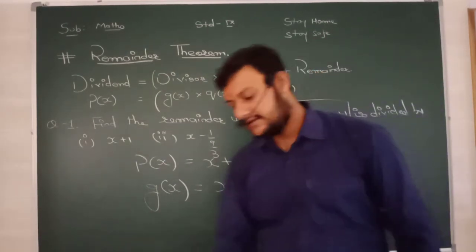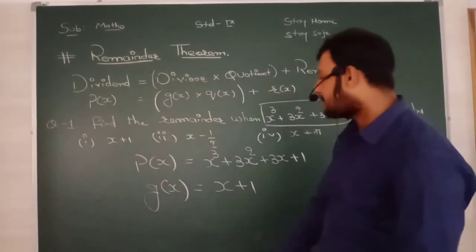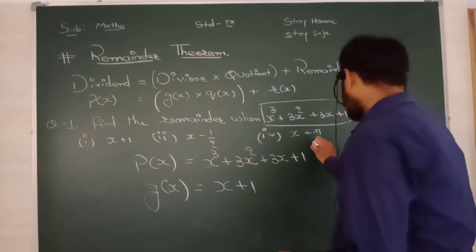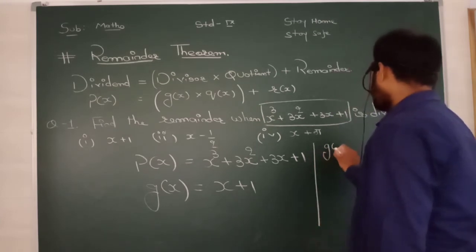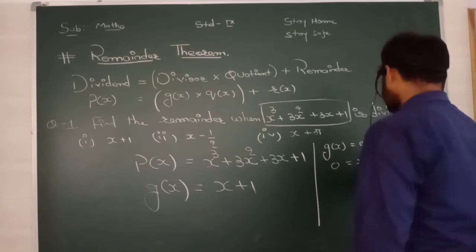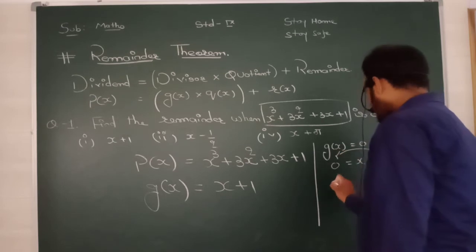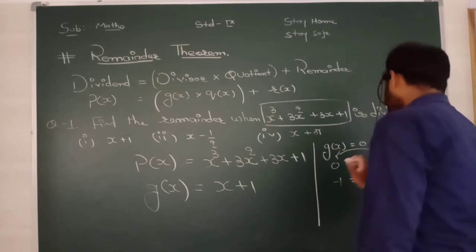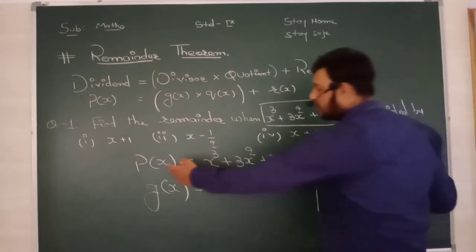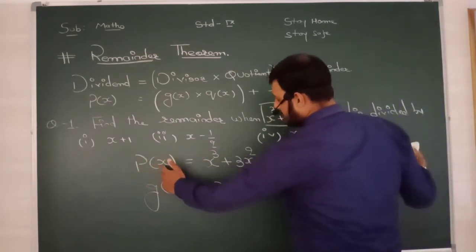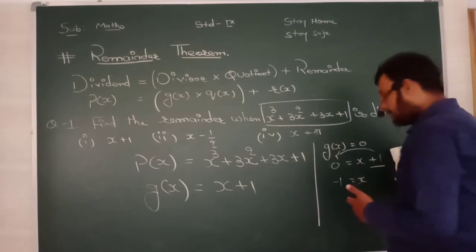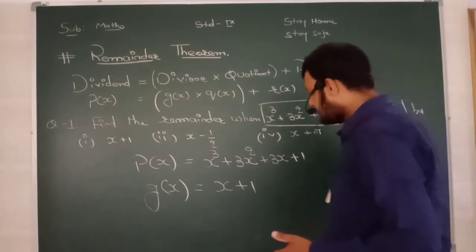Dear students, now we are going to discuss the easy method. वो easy method क्या है? Dear students, आपको g(x) को 0 assume करना होगा. You have to assume g(x) = 0, means 0 = x + 1. यह positive 1 अगर यहाँ पे आ गया तो बन गया negative. So x की value हो गई minus 1. In short, p(x) के equation में जहाँ भी x दिख रहा है, वहाँ आप minus 1 लिखेंगे.